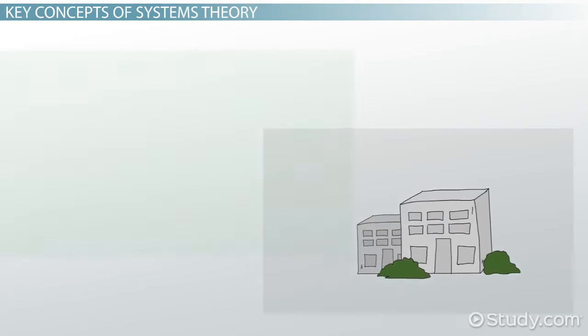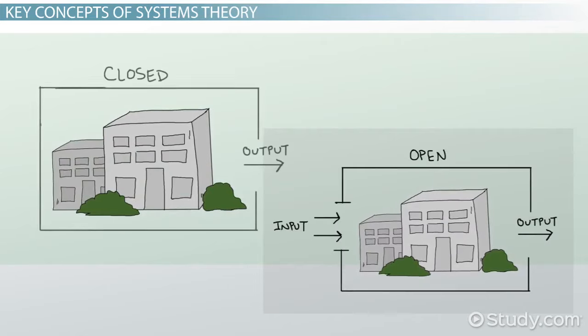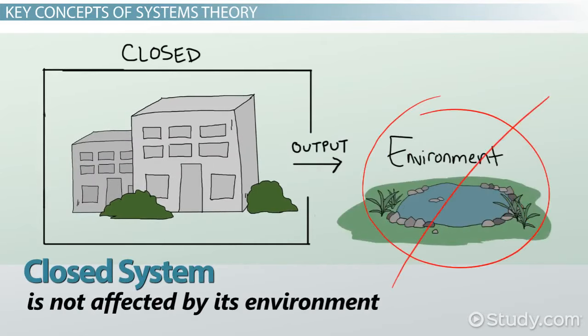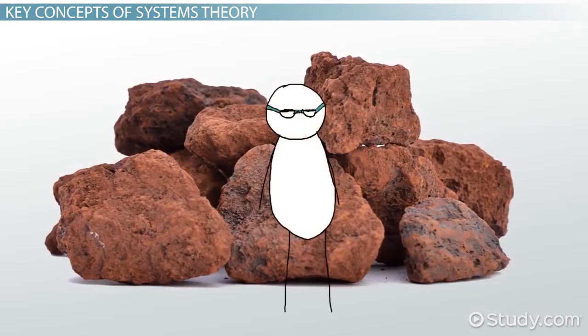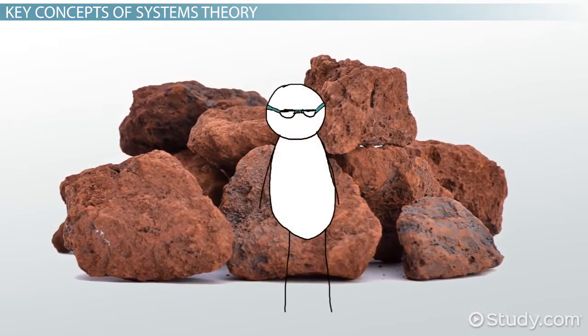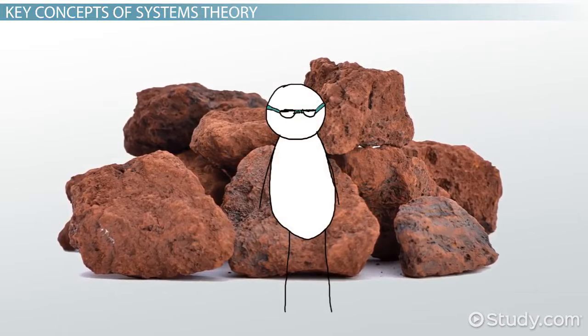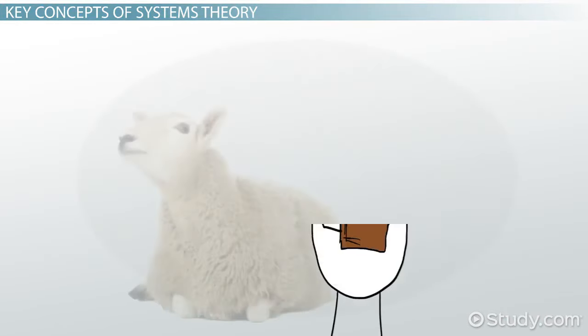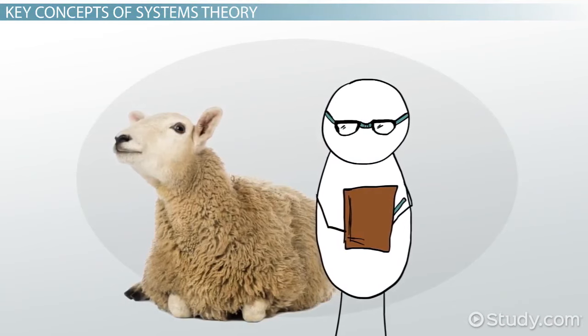As we noted in our definition, systems can be open or closed. A closed system is not affected by its environment. For example, a chunk of iron ore is not substantially affected by its environment. An open system is a system that is affected by its environment. A simple example is a living organism, such as an animal.